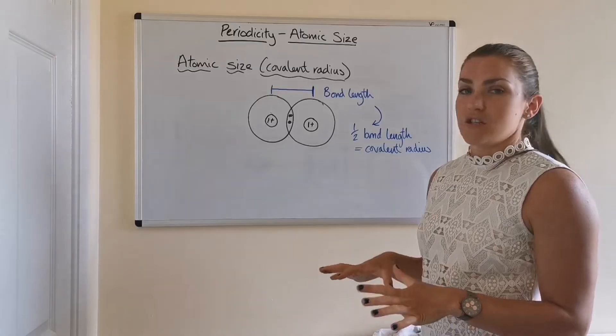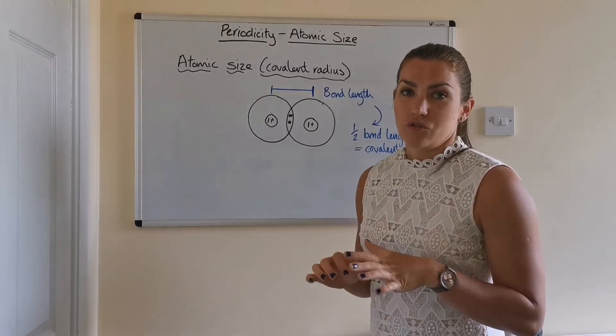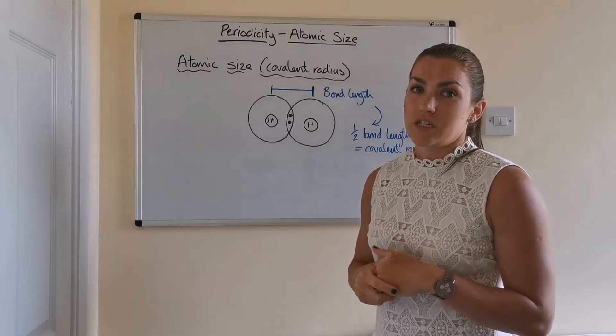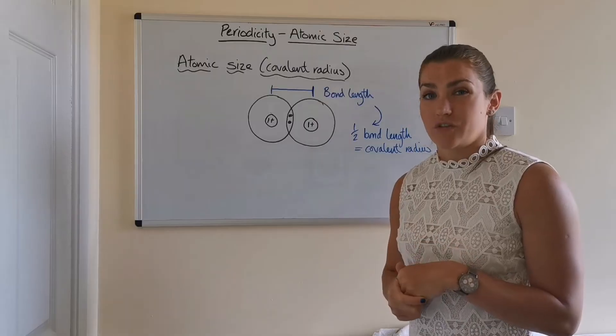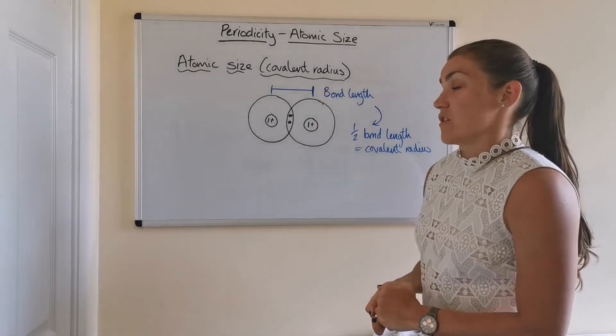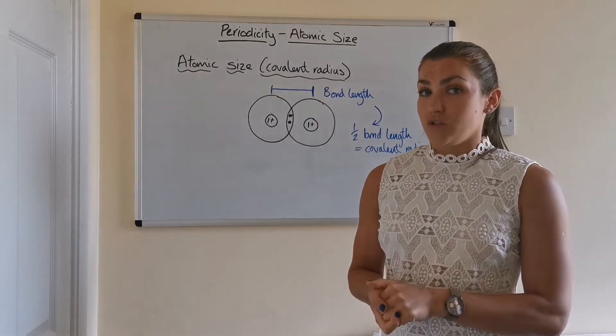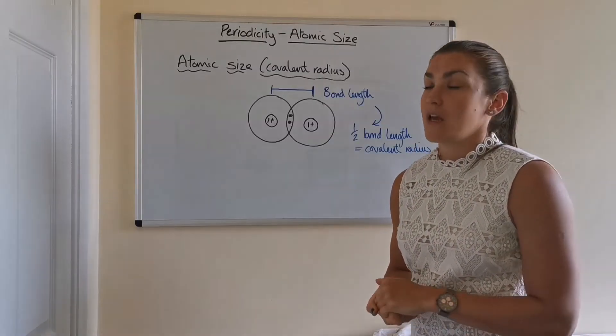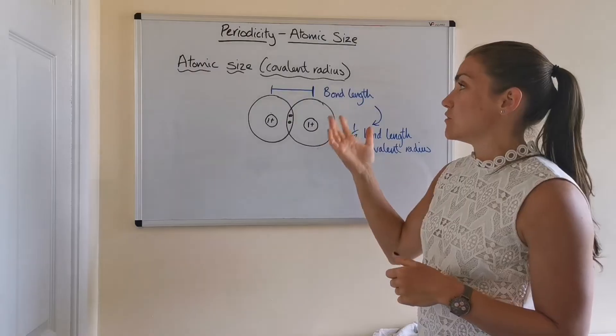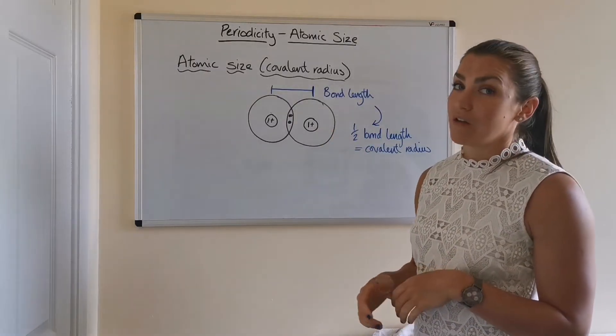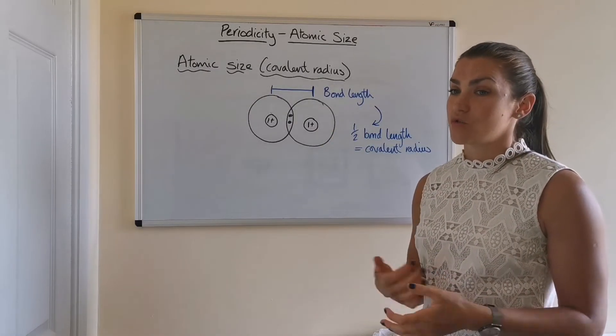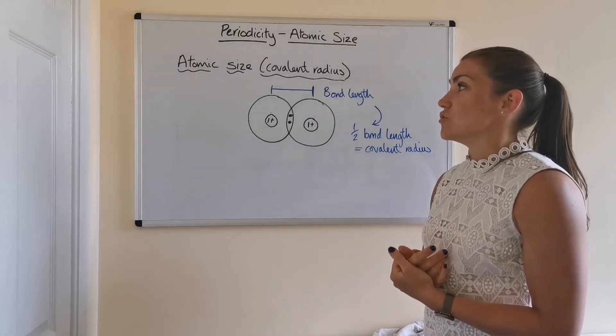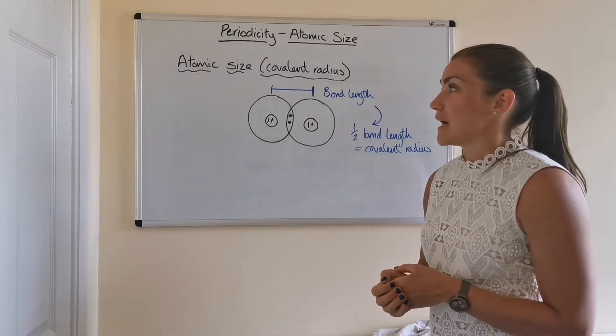Now, there is a page in the data booklet that tells you what the covalent radii or radius is for the different elements. However, there are no values for the noble gases. And that is because they don't form any bonds. So there's no way of measuring their covalent radius.